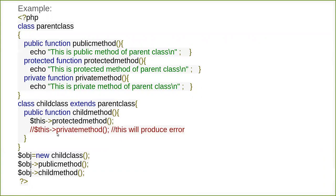Now we are going to explain the protected access specifier and how it is used in inheritance. Let's say we have a class called parent class, and within it we have three different functions: a public function, a protected function, and a private function. Now we have a child class which extends the parent class - it is inheriting the parent class. Inside the child class it has its own function called child method.